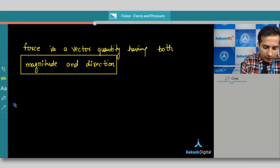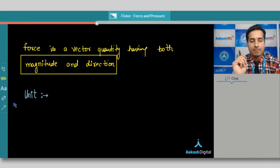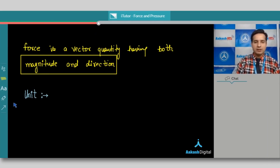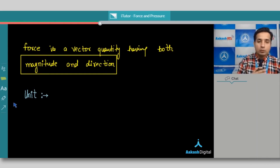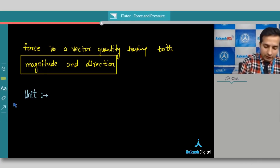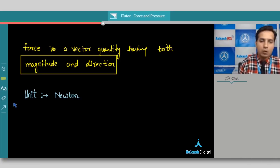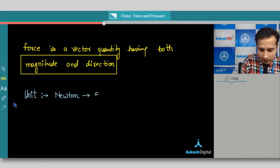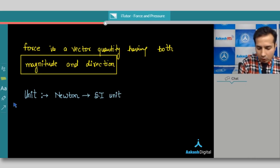Now let's discuss the unit of force. Every physical quantity has some unit — for example, length has the unit of meters. You would have already studied the chapter on units in smaller classes. The unit of force is the newton. Newton is the SI unit of force.